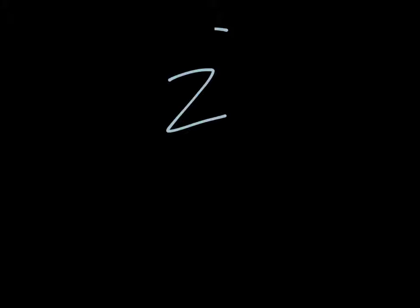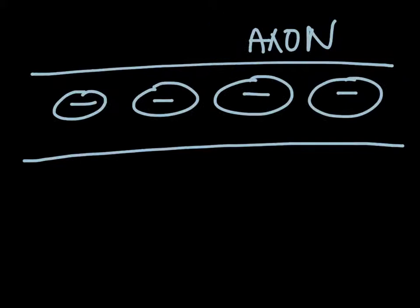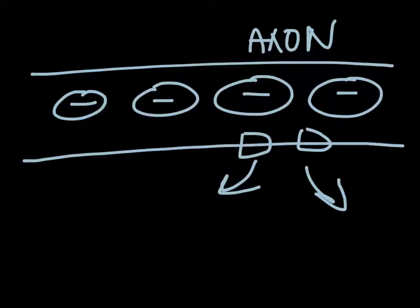Step two is depolarization. When a stimulus is detected, sodium gates open here, and sodium ions will flow into the axon by facilitated transport.